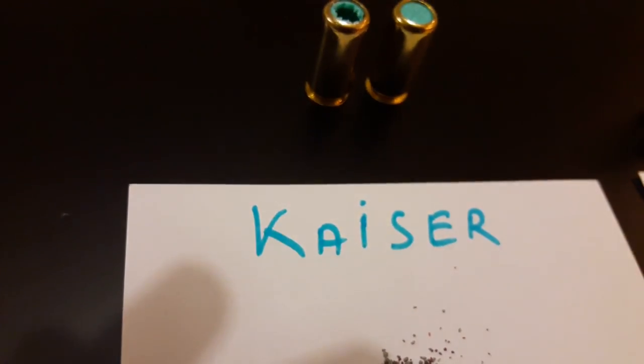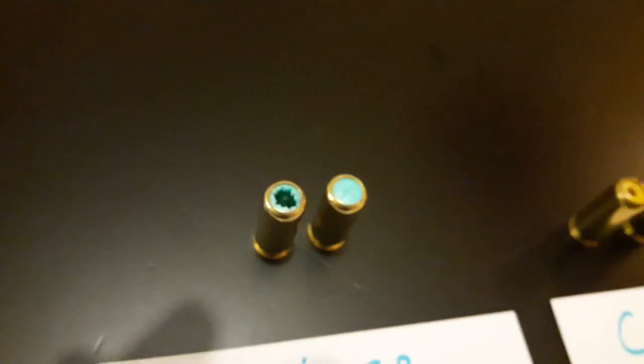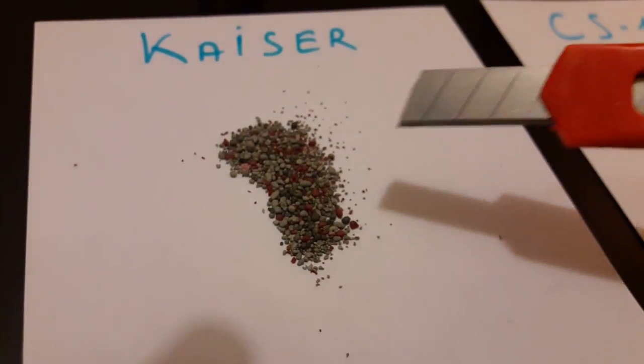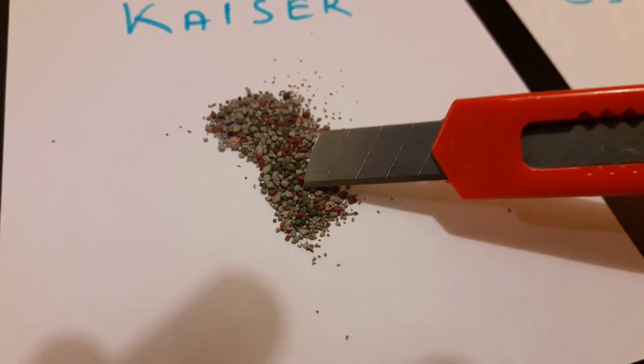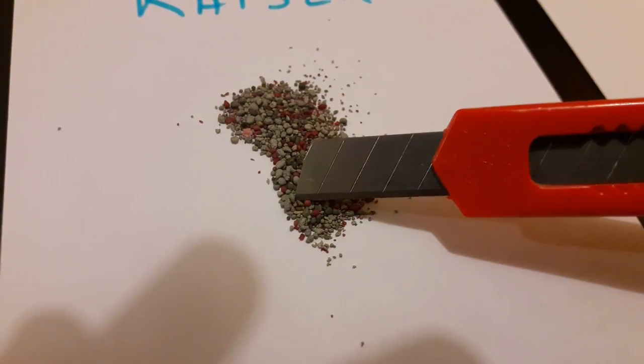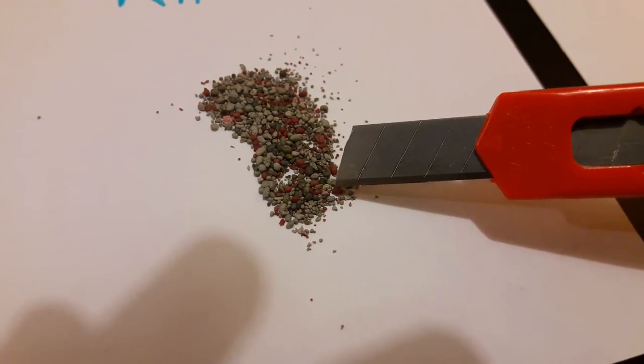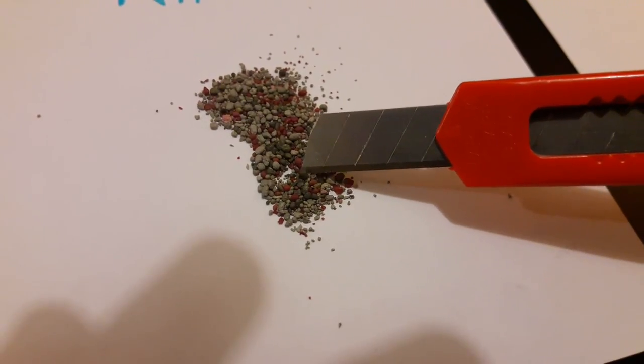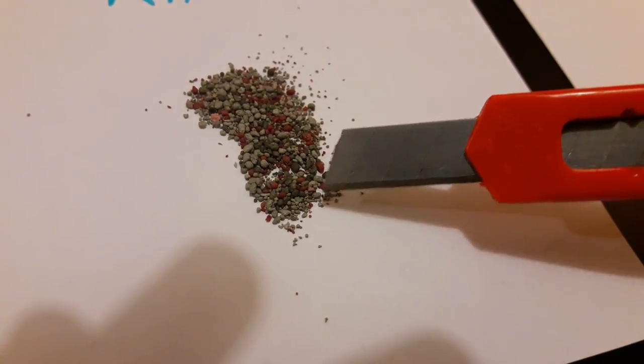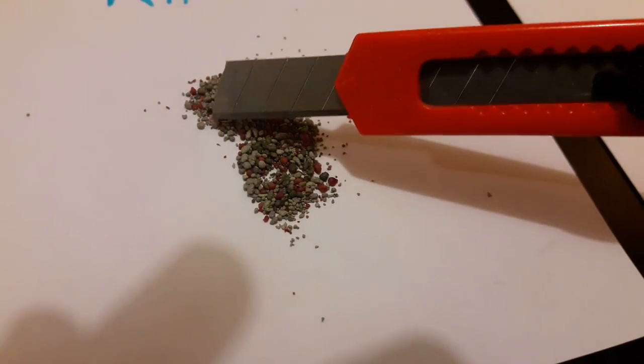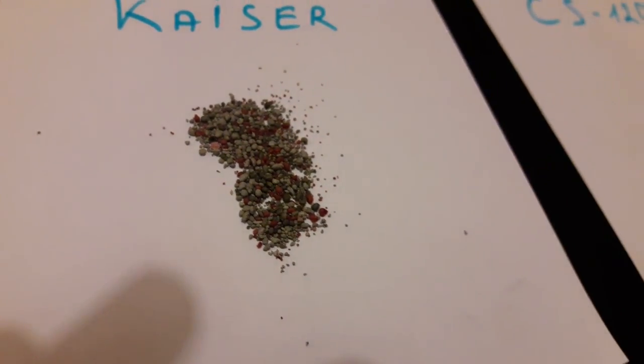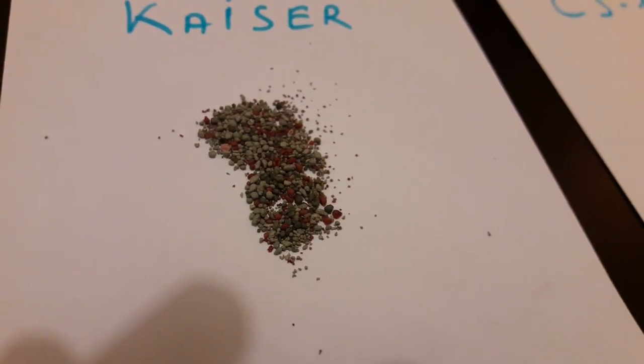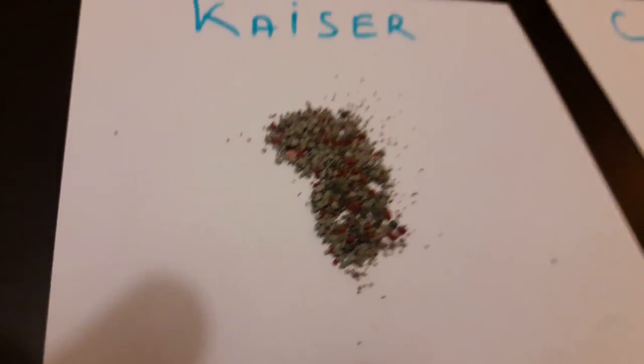Then we have my favorite, Kaiser. You can see you can open it very easily and you can see that the Kaiser propellant is, I think it has quality of all. You see there's three types of propellant, the grey granules, red granules, even four types. We have black granules and we have also a little bit of pink. So it's four types of propellants, it's a mixture, and I guess maybe this makes them a little bit better than the other one.